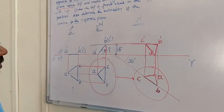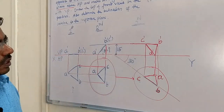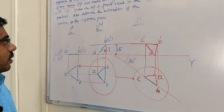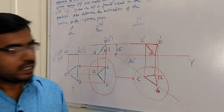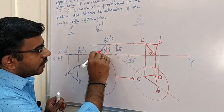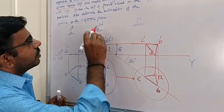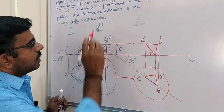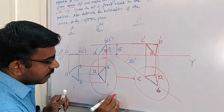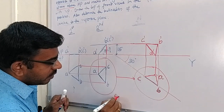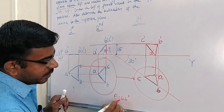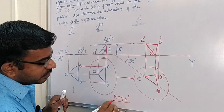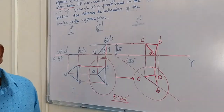By measuring this angle theta from the second position front view, theta is equal to 44 degrees.